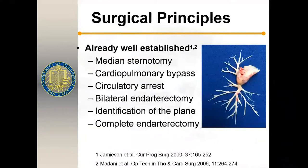The surgical principles are well established. We perform this operation through a median sternotomy on cardiopulmonary bypass with circulatory arrest. Why circulatory arrest? Because when you open the pulmonary artery — which is at the lowest point, exposed to atmospheric pressure — blood floods the field. A randomized controlled trial by the Papworth group demonstrated better outcomes with circulatory arrest, both in neurocognitive testing and reduction in pulmonary vascular resistance.